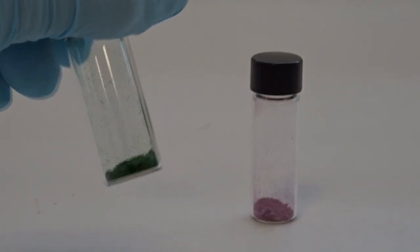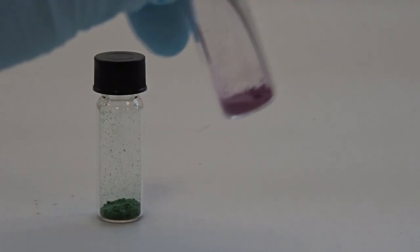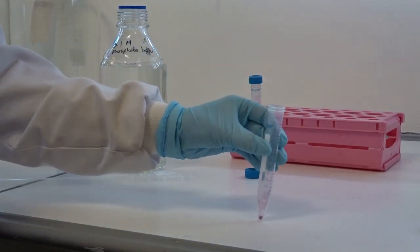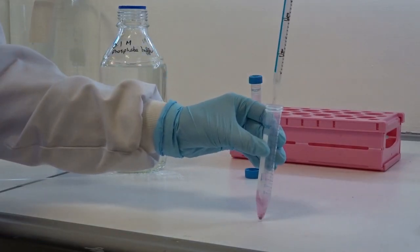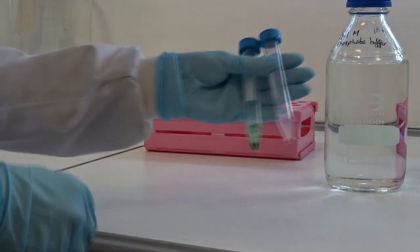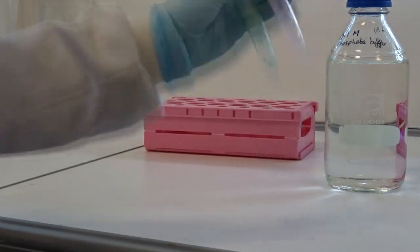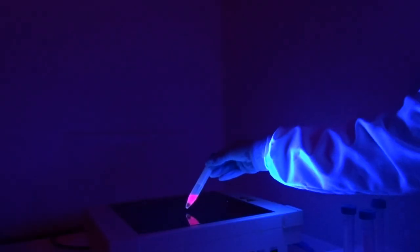Algal biomass is commonly freeze-dried to break the cells open. It's easy to extract phycobiliproteins due to their solubility. Adding water or phosphate buffer to freeze-dried cells allows us to obtain these pigments, which also fluoresce under UV light.